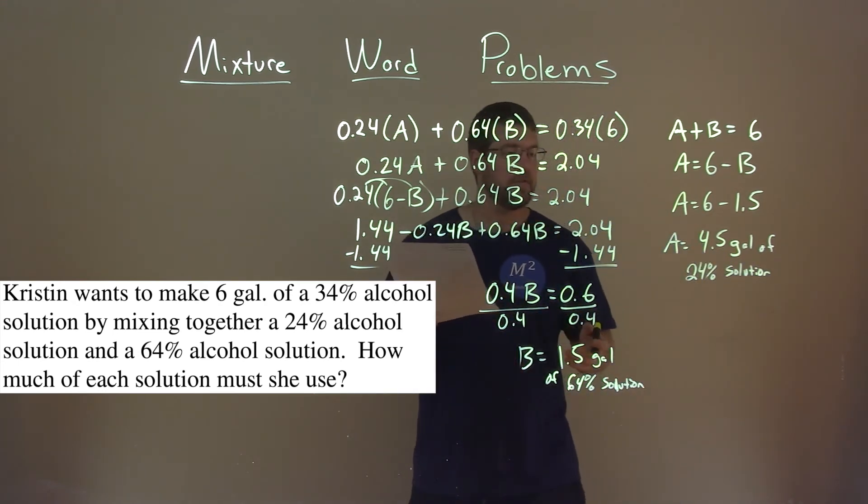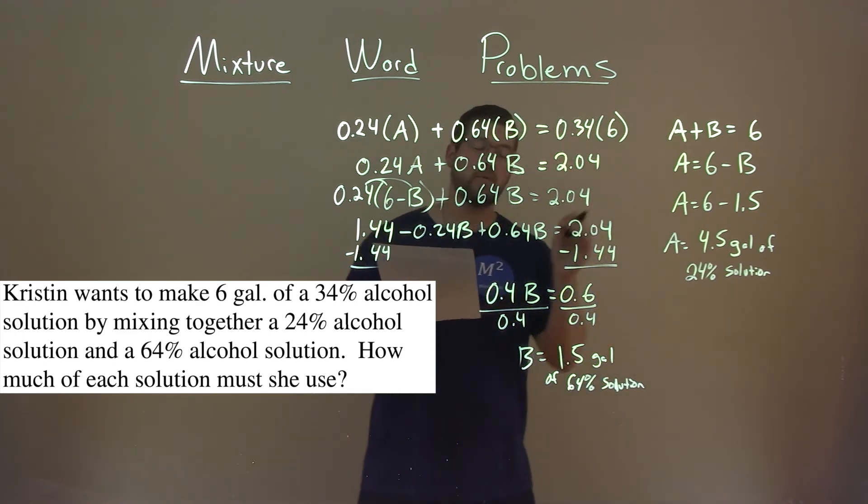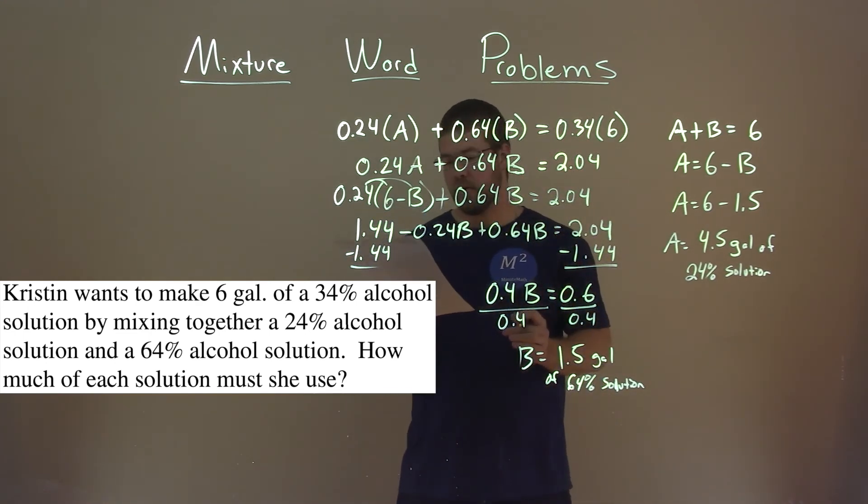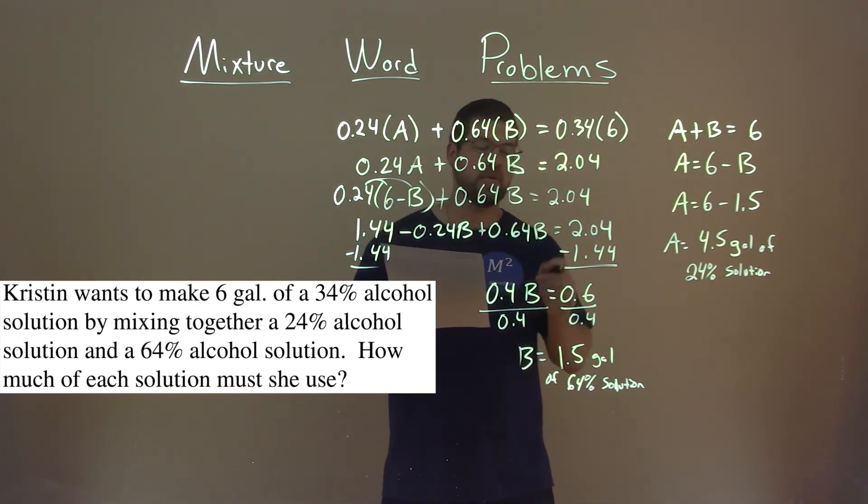So there we have our final answer. We have 4.5 gallons of 24% solution and 1.5 gallons of the 64% solution.